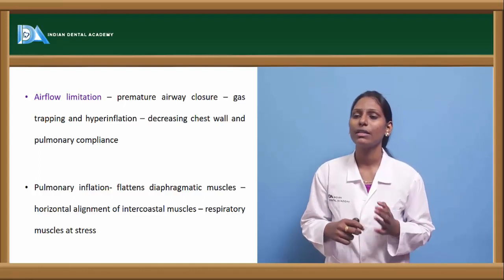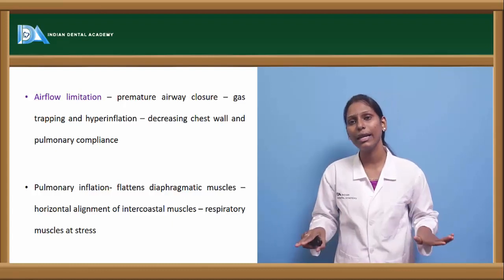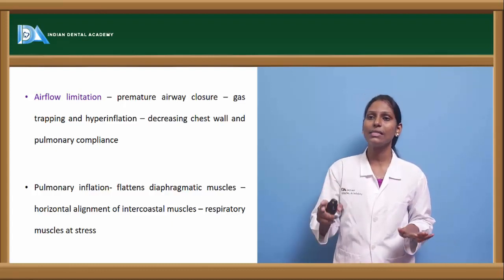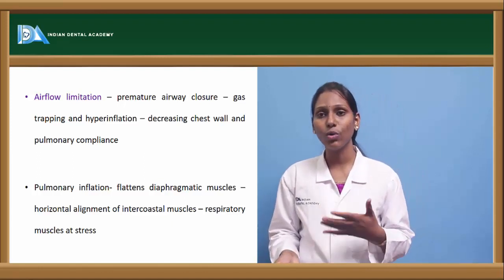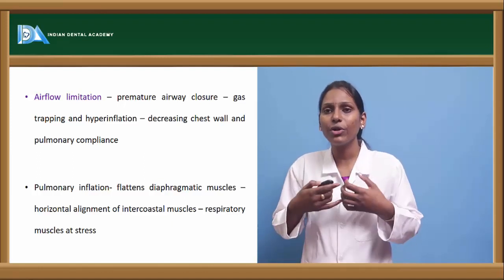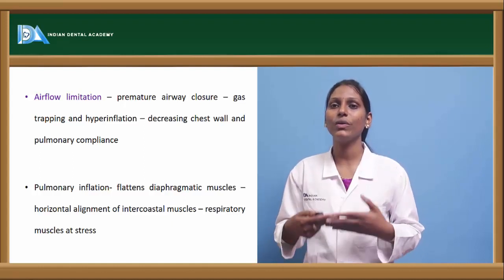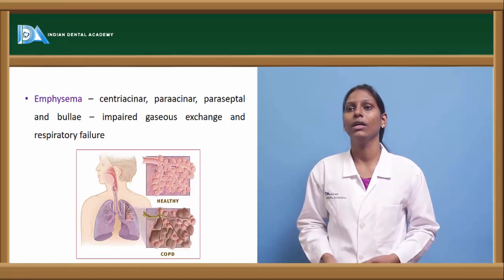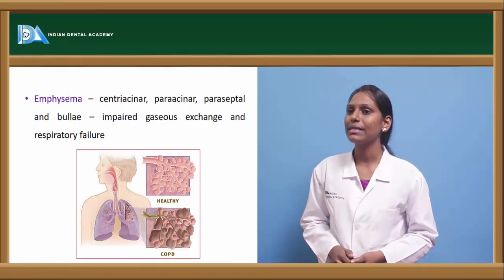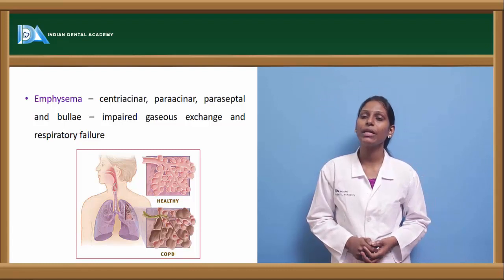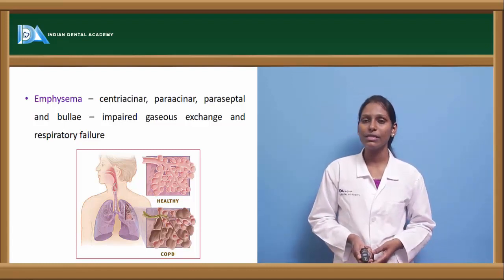Pulmonary hyperinflation leads to flattening of the diaphragm and horizontal alignment of the intercostal muscles, placing the respiratory muscles under more stress and requiring more energy for breathing. Emphysema involves centriacenar, paraacenar, paraseptal changes, and bullae formation, with impaired gaseous exchange and respiratory failure.